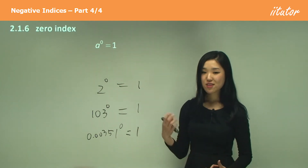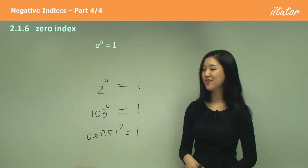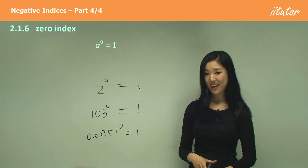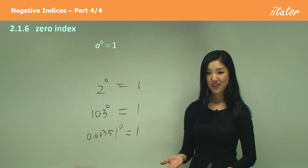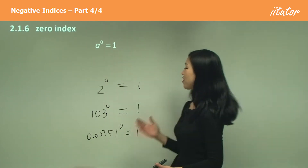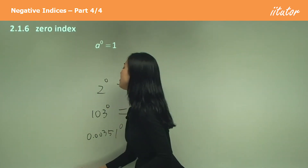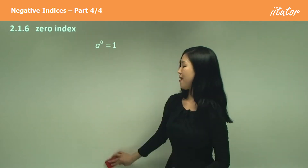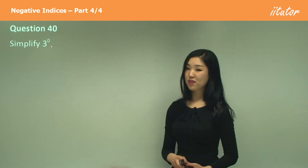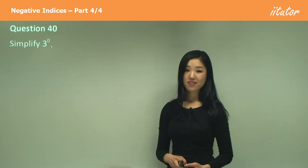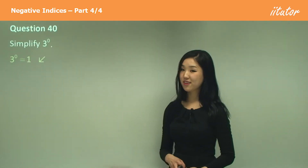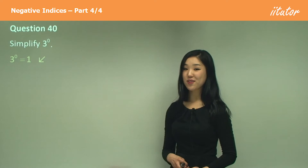Whatever to the power of zero will be one — that's all you need to remember here. So try to remember that. What do you think three to the power of zero is? One. Because anything to the power of zero is one.